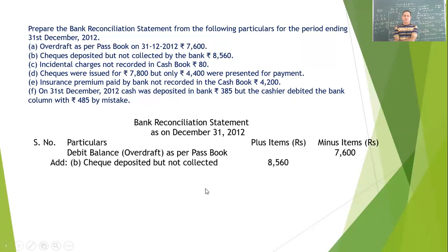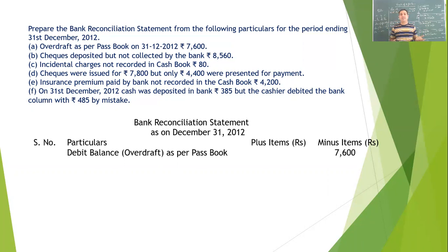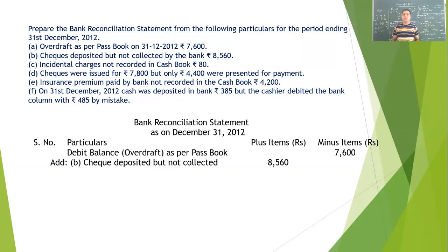Next is incidental charges not recorded in cashbook. The bank deducted incidental charges of rupees 80, but it is not recorded in the cashbook, so the balance of cashbook is higher. To make the passbook balance equal to the cashbook balance, we will add it — so it goes to the plus side.